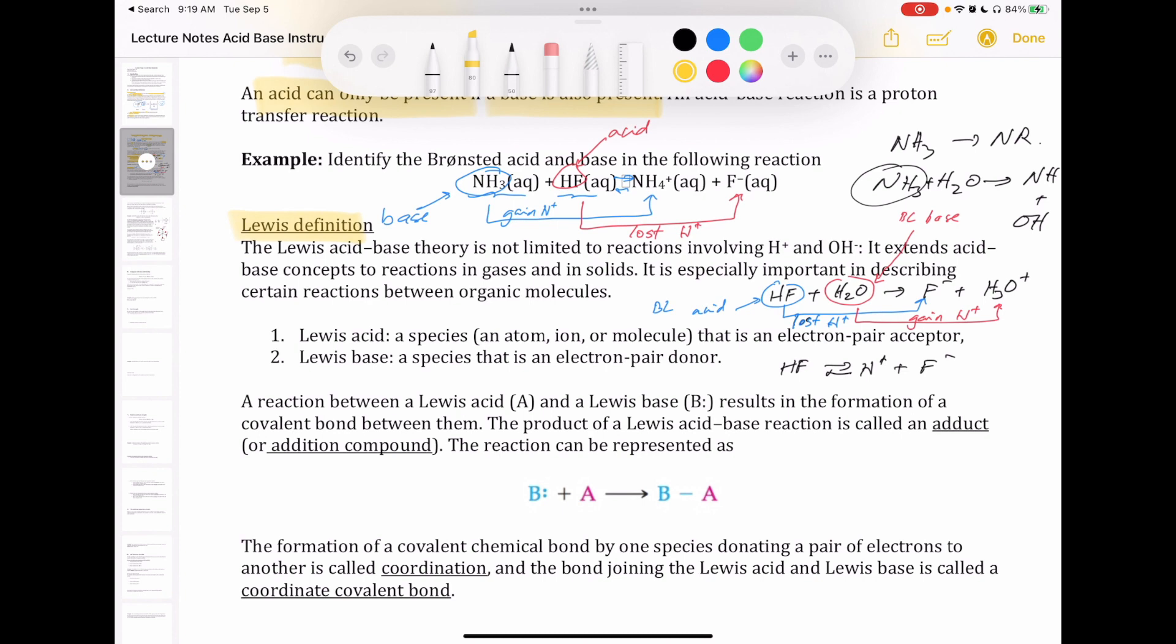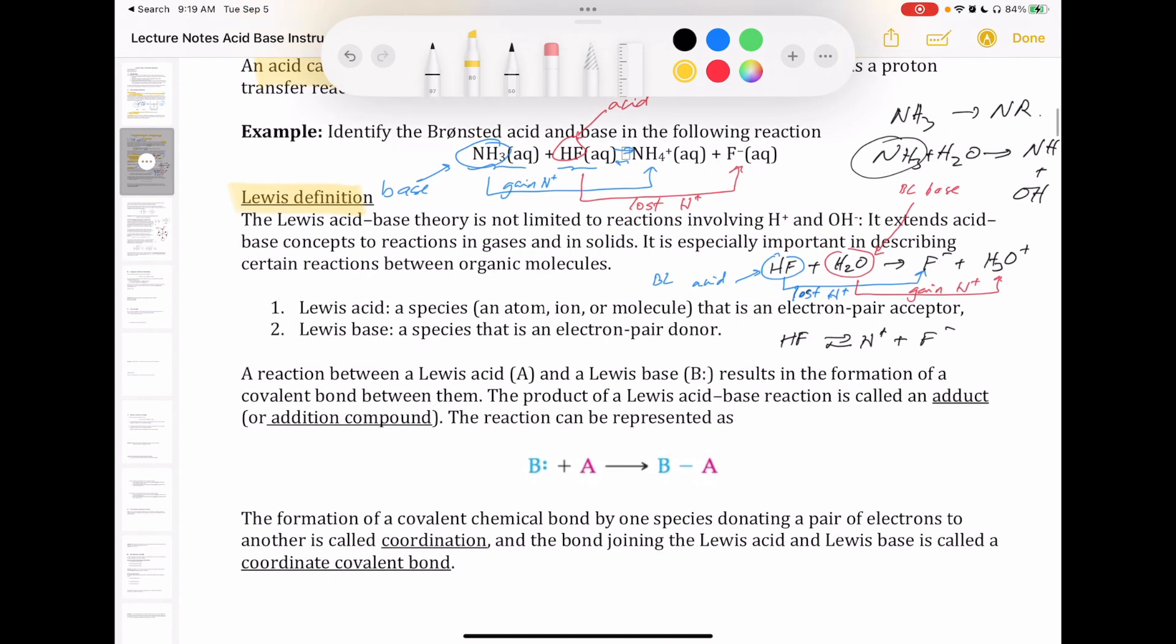But most of our work is going to center on the Bronsted-Lowry definition. The beauty of the Lewis definition is that it's not limited to reactions that contain protons or OH-. It actually takes it beyond that and uses the more fundamental particle, which is the electron, to define acids and bases. This allows us to expand the concepts of acids and bases to gases and solids, so things that don't contain water. So it goes beyond just aqueous solutions.